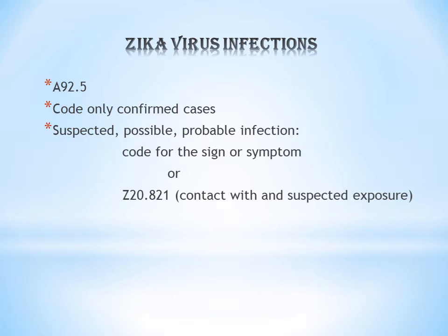The next topic is Zika Virus Infection, code A92.5. Here, similar to HIV which we already discussed, you have to code only confirmed cases. If in the documentation it is mentioned as Suspected, Possible, or Probable, you cannot code A92.5.